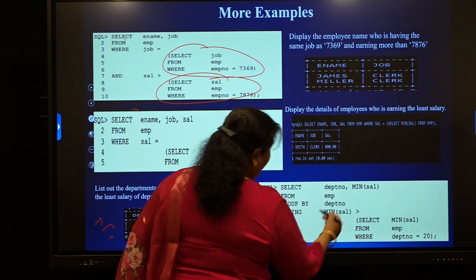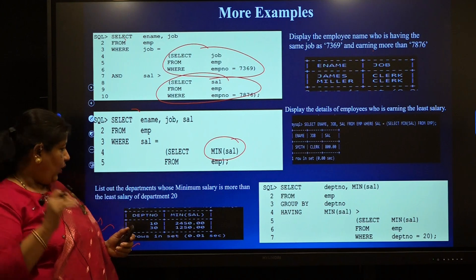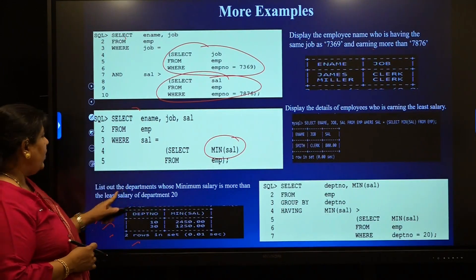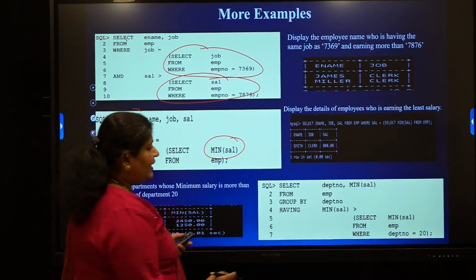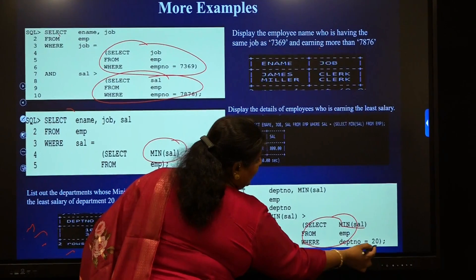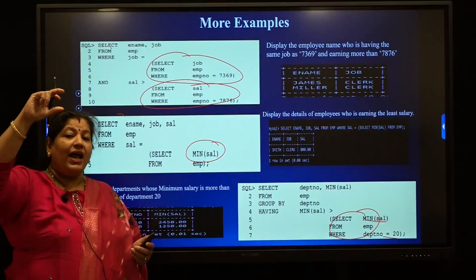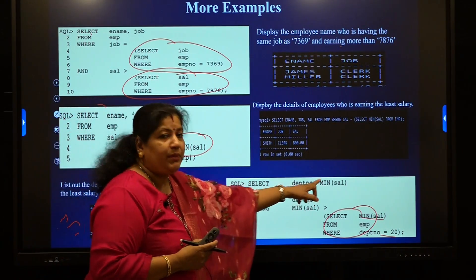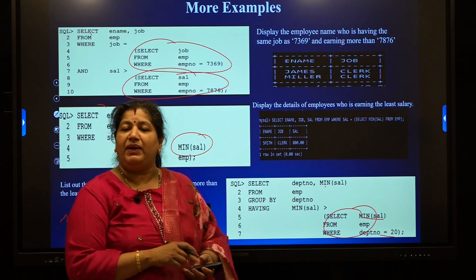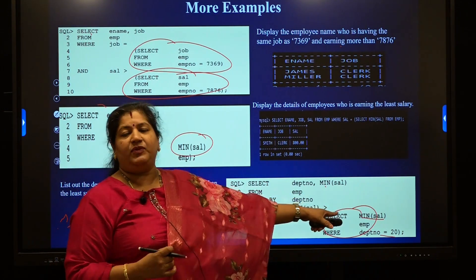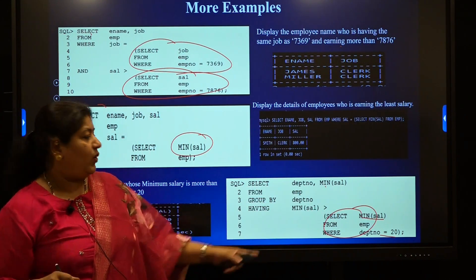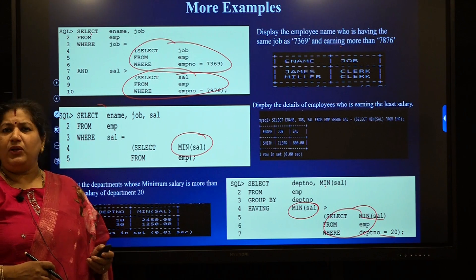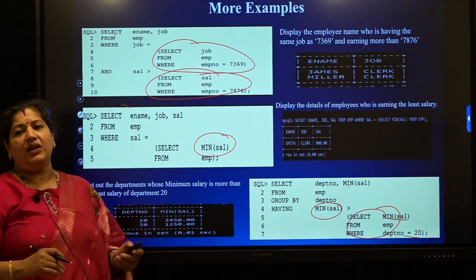I can even use the HAVING clause along with GROUP BY or aggregate operators. For example: list out the departments whose minimum salary is more than the least salary of department 20. First, find the least salary of department 20 as the subquery. Then, SELECT department number and minimum salary FROM EMP GROUP BY department number, with HAVING minimum salary greater than the minimum salary of department 20. These are examples of single row subqueries.